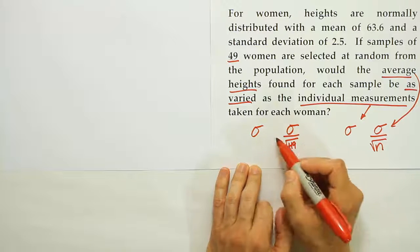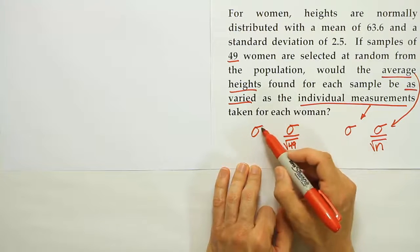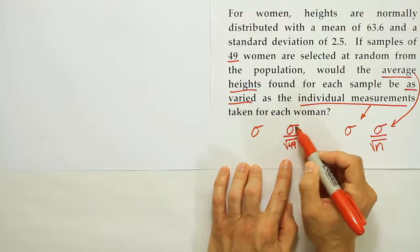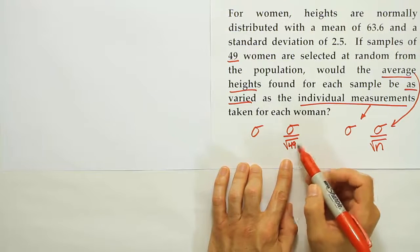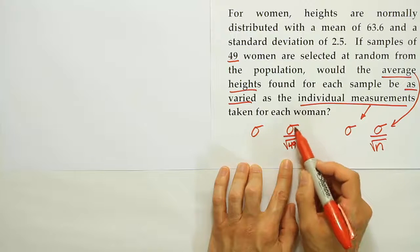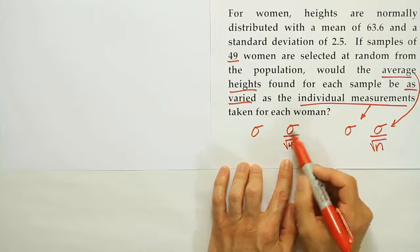So what this is basically going to boil down to is you're comparing a value, sigma, versus the same value divided by 7. Of course, if that's the case, if you're going to divide this value by 7, it'll become smaller, right?